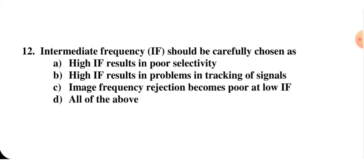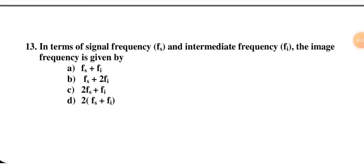Next question: intermediate frequency should be carefully chosen — high IF results in poor selectivity (correct), high IF results in problems in tracking of signals (correct), and image frequency rejection becomes poor at low IF. All is correct, so D is the right option. You should know: if IF value is high, poor selectivity and tracking problems occur; image frequency rejection also becomes poor.